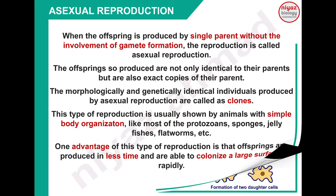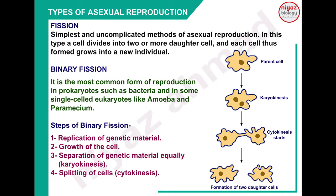Now the types of asexual reproduction. The first type is fission which is the simplest and uncomplicated method - ایک دم simple process ہے۔ اس میں ایک cell دو یا دو سے زیادہ cells میں ٹوٹ جاتا ہے اور جتنے بھی cells ٹوٹتے ہیں وہ daughter cells کہلاتے ہیں اور وہ نئے individual میں grow کرتے ہیں۔ اگر ایک cell دو cell میں ٹوٹ رہا ہے تو اس کو binary fission بولتے ہیں، اور اگر ایک cell دو سے زیادہ cells میں ٹوٹ رہا ہے تو اس کو multiple fission بولتے ہیں۔